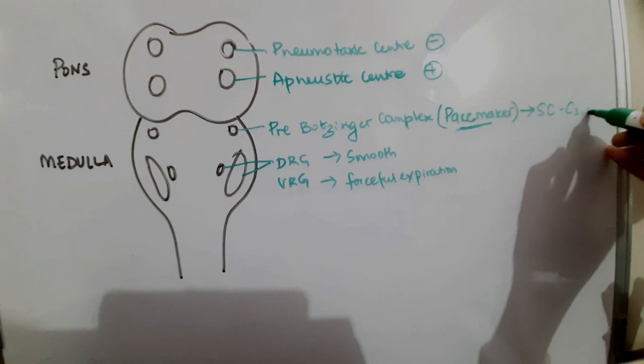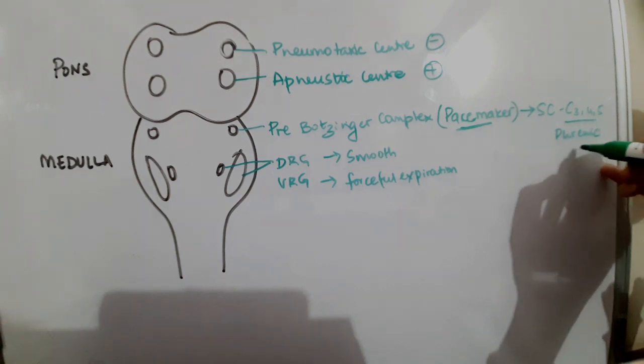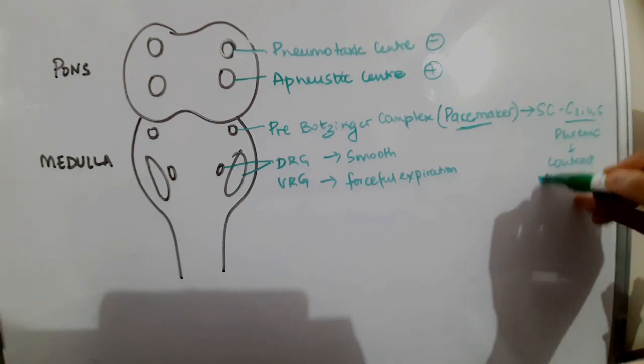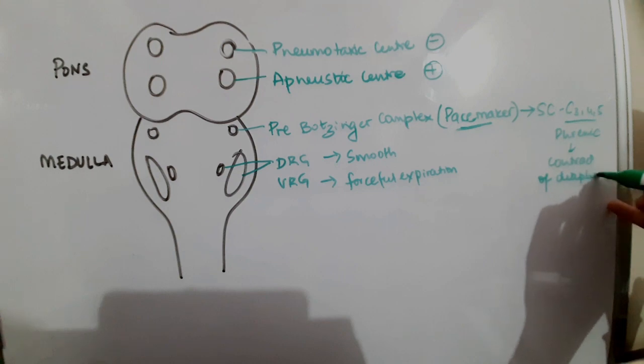This signal first goes to the spinal cord, especially nerve roots C3, C4, and C5, which make up the phrenic nerve. The phrenic nerve is the main motor supply to the diaphragm. The phrenic nerve stimulates the diaphragm contraction which brings about inspiration.